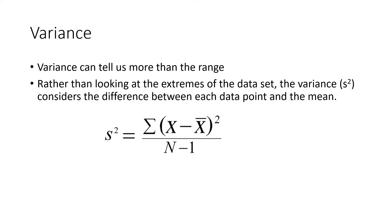Variance can tell us more than the range — it's another measure of dispersion. Rather than looking at the extremes of the data set, the variance, S squared, considers the difference between each data point and the mean.